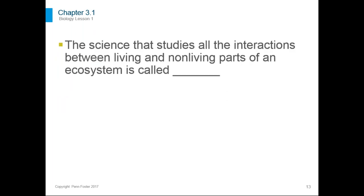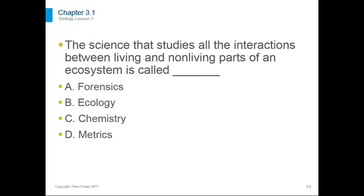The next questions aren't polls — just think about your answers. The science that studies all of the interaction between living and non-living parts of an ecosystem is called what? Of the answers — forensics, ecology, chemistry, and metrics — the only one that deals with living and non-living parts of an ecosystem would be ecology.